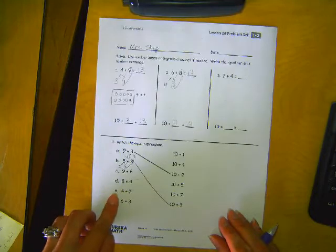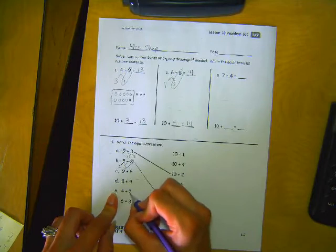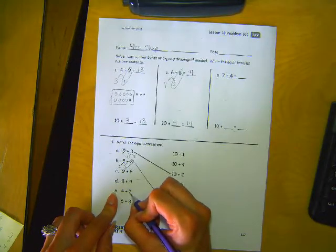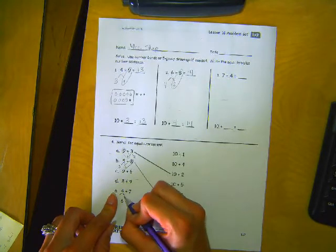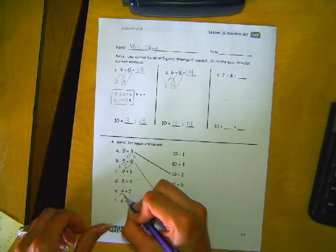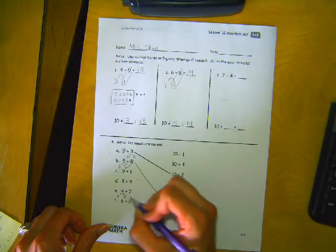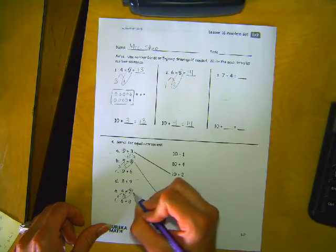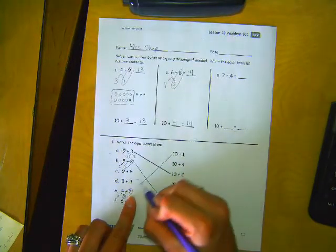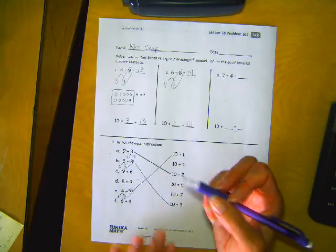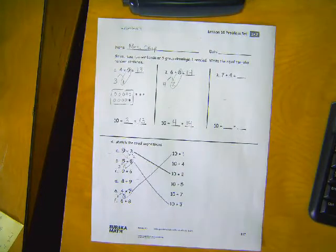Let's go down to e. 4 plus 7. How many does 7 need to get to a friendly ten? 7 and 3 make ten so we need to take 3 away from 4 which means we'll need one more because 3 and 1 make 4. Now we have this as our friendly ten plus one more so ten plus one is the match. Go ahead and do c, d, and f on your own.